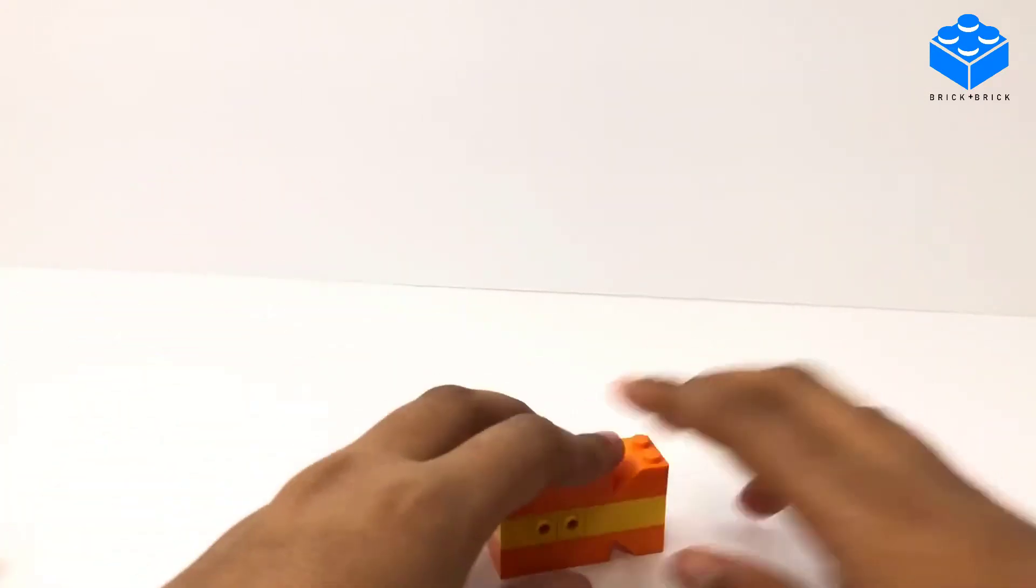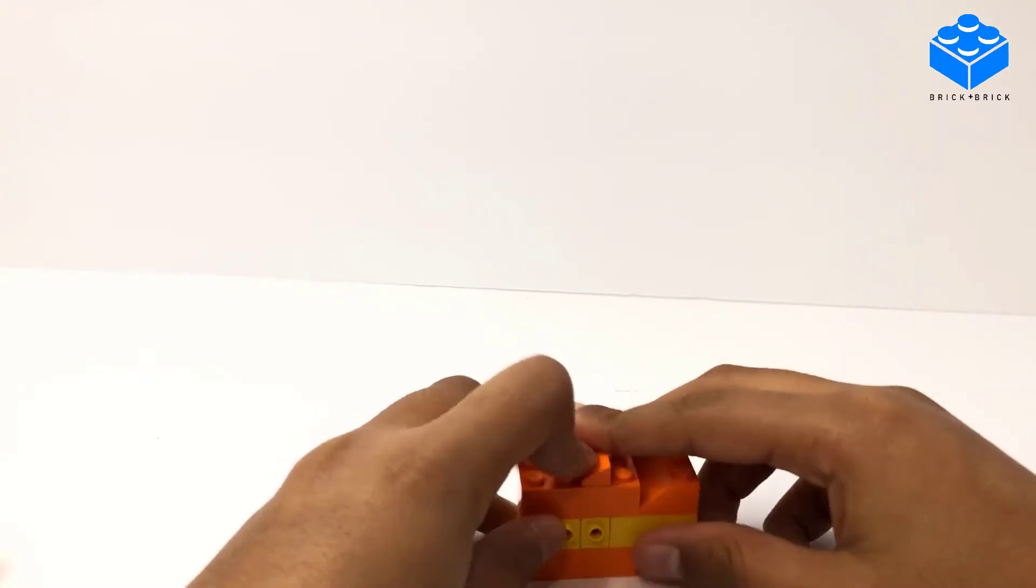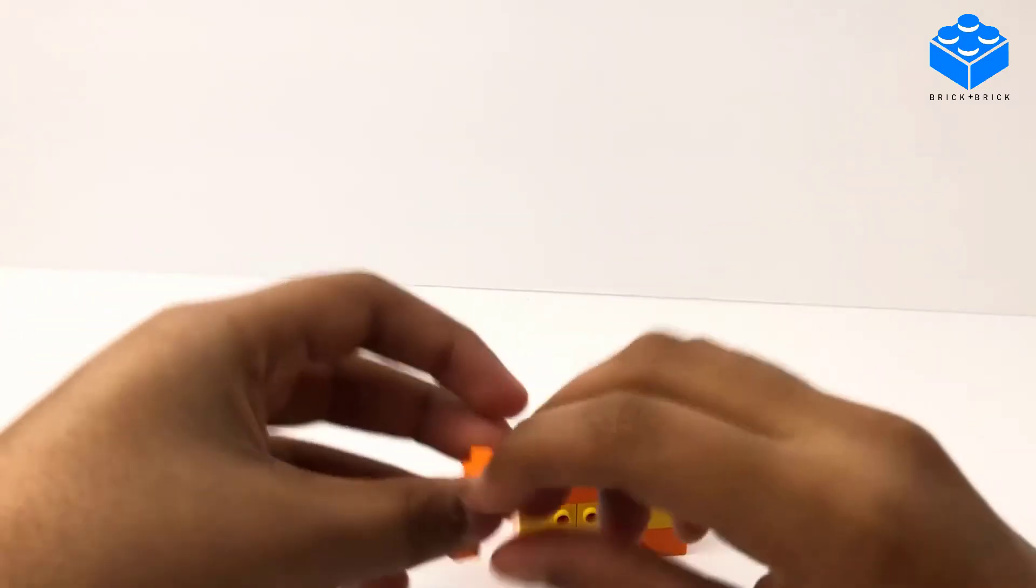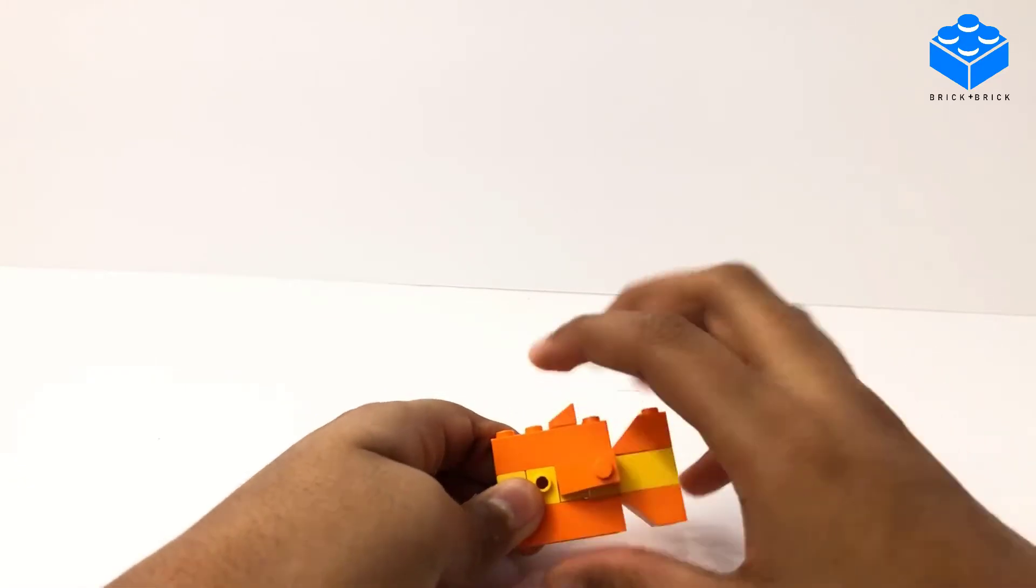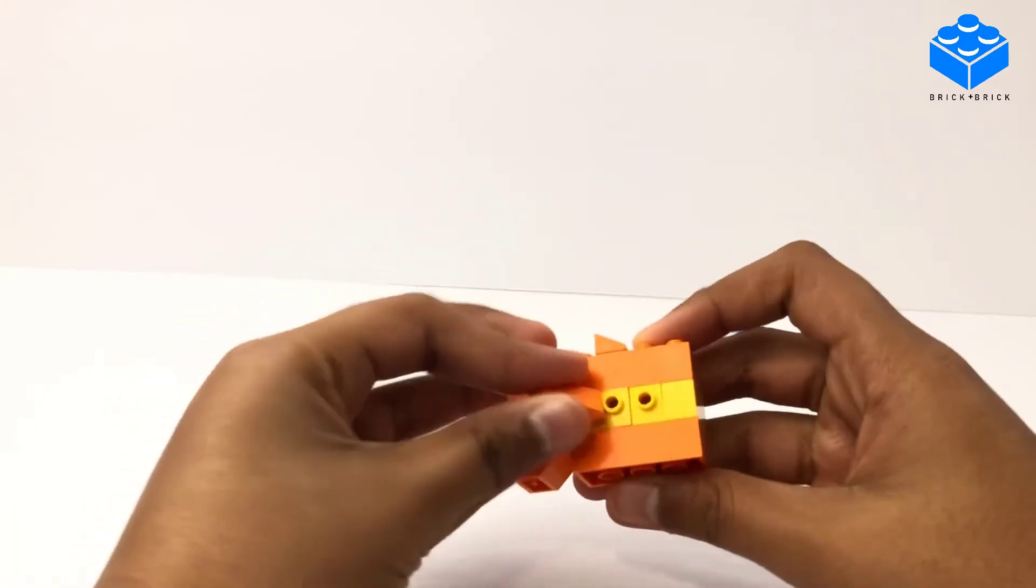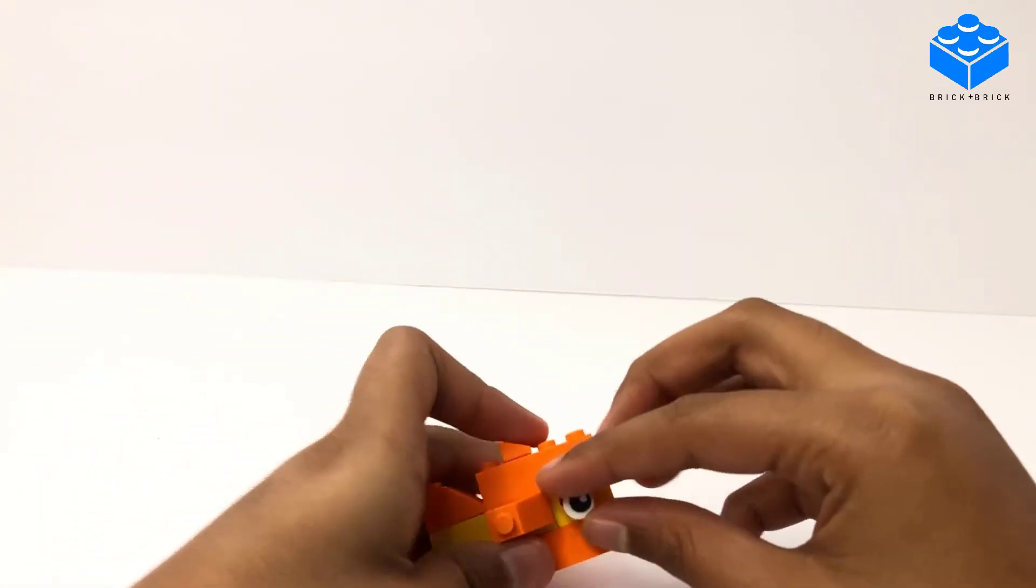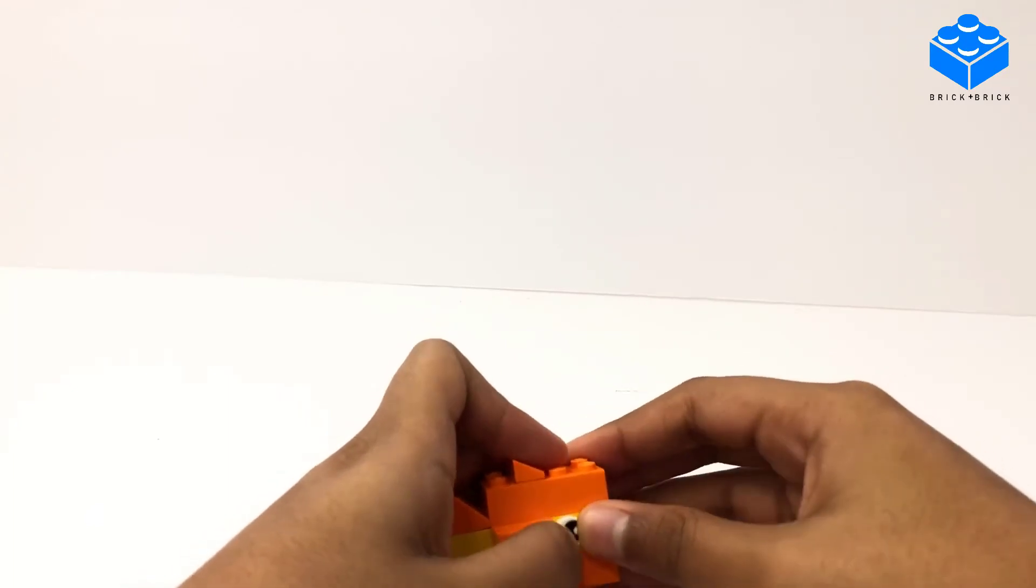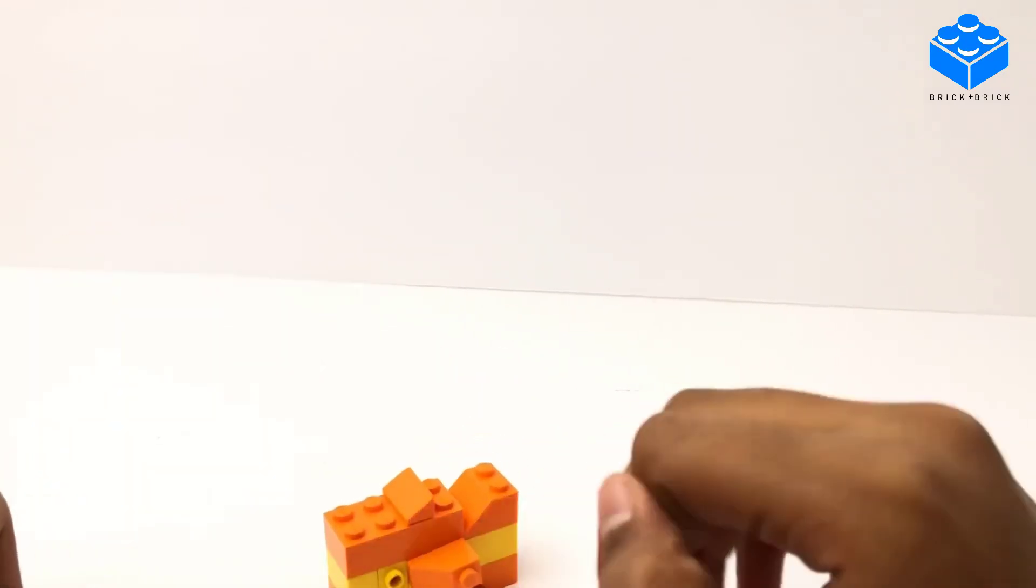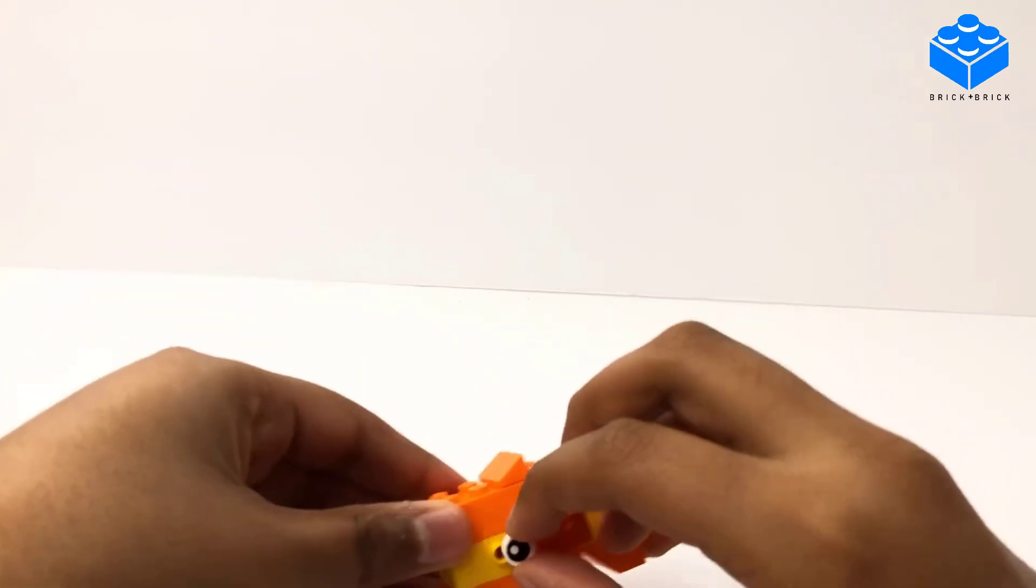Then let's get our cheese piece and put it right here. Now let's put these fins on, which are 1x2 slopes. Then get our tile pieces, which are the googly eyes, pop them here, and make the other one go this way.